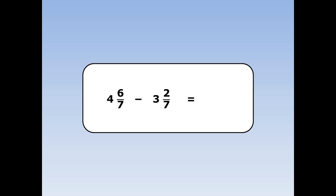4 and 6 sevenths take away 3 and 2 sevenths. First we take away the whole numbers: 4 take away 3 is 1. Next we take away the fractions: 6 take away 2 is 4 and the seventh stays the same.